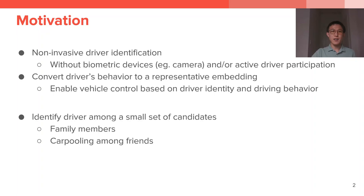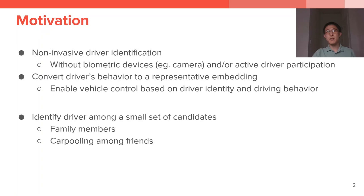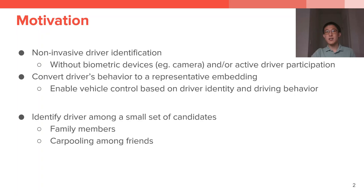The primary motivation for our work is to perform non-invasive driver identification. Non-invasive driver identification is useful when privacy is a concern, such that installation of biometric devices is not allowed, or in situations where active driver participation is not desired. To achieve this, our system converts a short snippet of driving data to a representative embedding for driver identification. With this system, engineers can enable vehicle control based on driver identity and driving behavior. A popular use case would be to identify the driver of a family car or of a car shared by carpooling friends. In these cases, possible drivers are limited to family members or close friends, so the system only needs to identify from a small set of candidates. We will explain our results on this later as well.